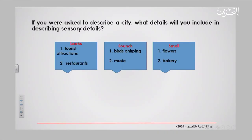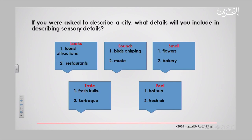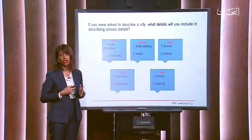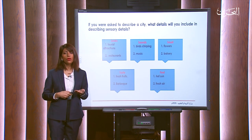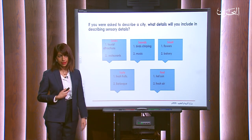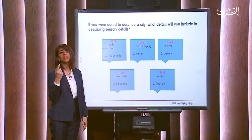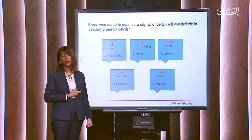You could smell flowers or the baking from the bakery. For taste, you can taste fresh fruits or barbecue — anything you wrote related to taste could be correct. For feel: hot sun and fresh air — you will feel the heat from the hot sun and you could feel the fresh air. These are just examples; you can add or omit ideas according to the place or thing you are going to describe in your email.